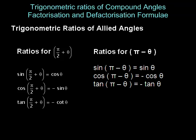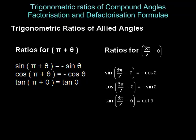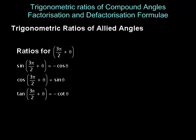Sine of pi minus theta is sin theta, cos of pi minus theta is minus cos theta, and tan of pi minus theta is minus tan theta. Sine of pi plus theta is minus sin theta, cos of pi plus theta is minus cos theta, but tan of pi plus theta is tan theta. Sine of 3 pi by two minus theta is minus cos theta, cos of 3 pi by two minus theta is minus sin theta, tan of 3 pi by two minus theta is cot theta. Sine of 3 pi by two plus theta is minus cos theta, cos of 3 pi by two plus theta is sine theta, tan of 3 pi by two plus theta is minus cot theta.